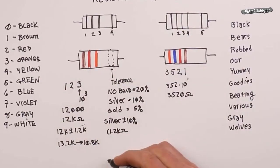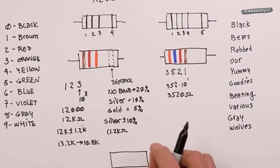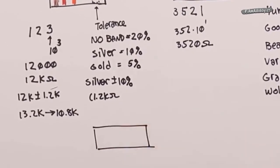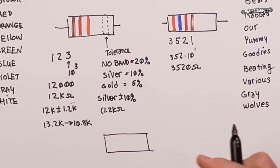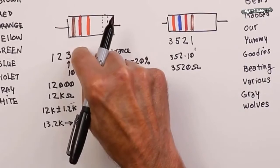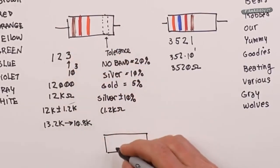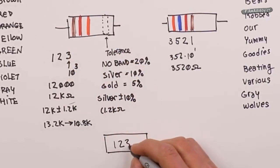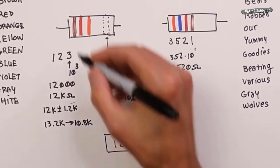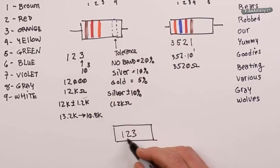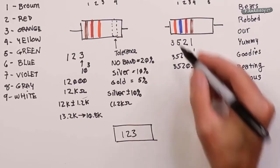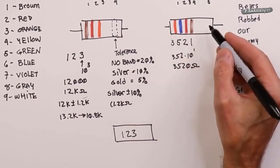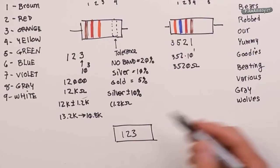If you have a surface mount resistor, one of those little square tiny little things, you know, like that big, they're not going to use colors. What they will do is just print the number sequence on there. So for this one, it would just say one, two, three or more. In other words, you know, it's a one, a two, and then 10 to the third, so it's 12K. And it would be the same kind of thing over here. They're just too tiny. You're never going to see the colors.